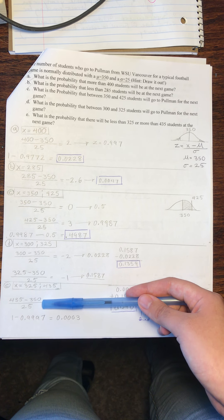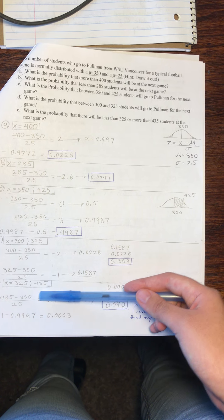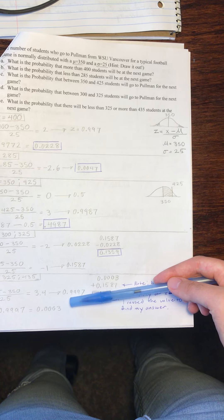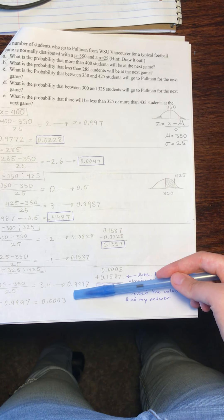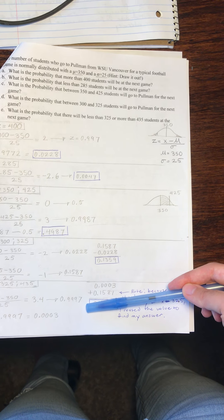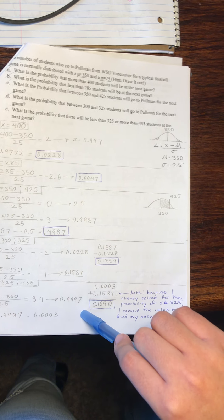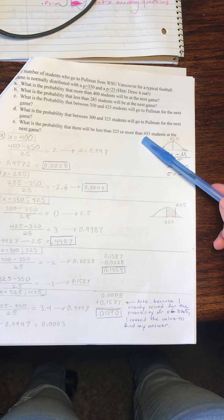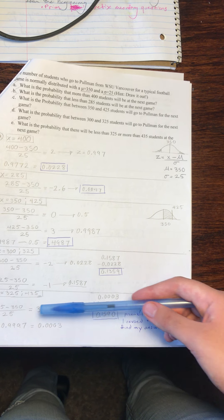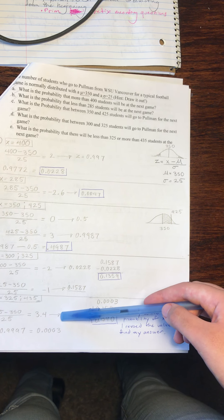We have 435 minus 350 divided by 25. That gives us 3.4, and that gives us a z value of 0.9997. Because we are looking for a greater than value, because we are looking for more than 435 students at the next game, we will take 1, subtract our result, and that leaves us with 0.0003.